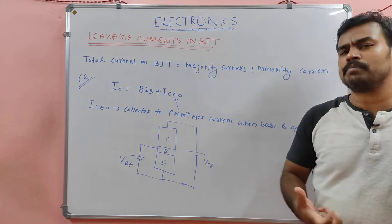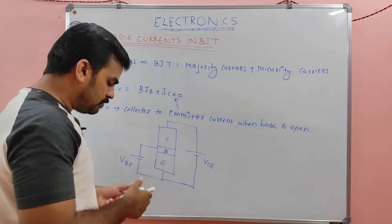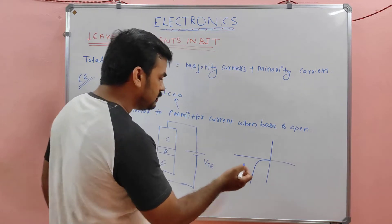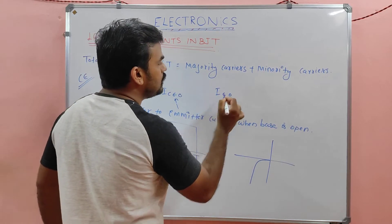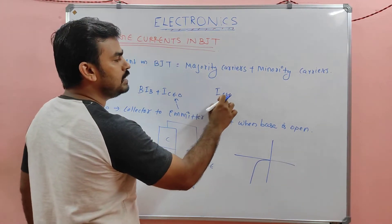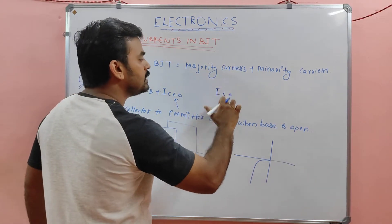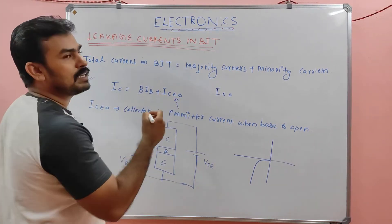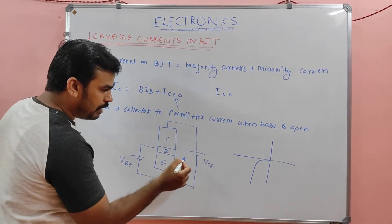You can see this reverse current in the PN junction diode reverse characteristics — that same reverse current is represented as ICO. To specify whether it is common emitter or common base configuration, we use ICEO or ICBO respectively. Generally, the leakage current is represented as ICO, but in common emitter configuration it is represented as ICEO, which stands for collector-to-emitter current.